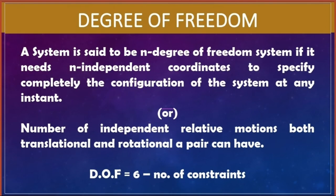Degree of freedom: a system is said to have n degrees of freedom if it needs n independent coordinates to specify completely the configuration of the system at any instant. Simply, degree of freedom is defined as the number of independent relative motions — both translational and rotational — a body can have. In general, a body in space has six degrees of freedom. If there are constraints, degree of freedom equals six minus the number of constraints.